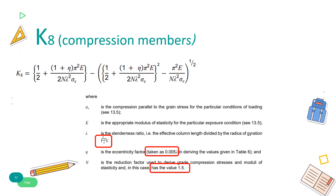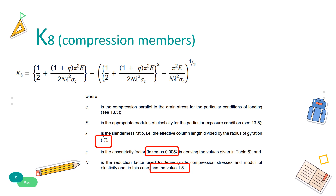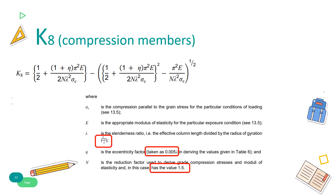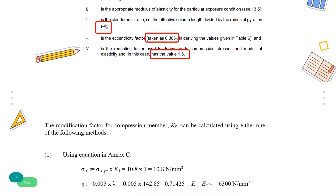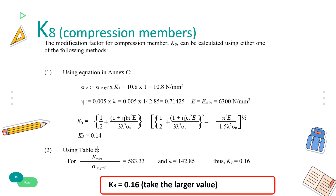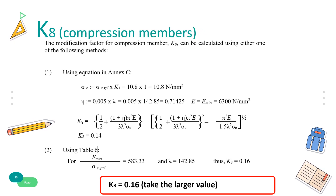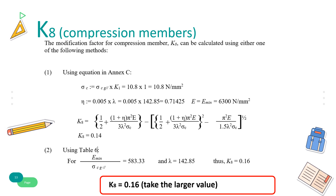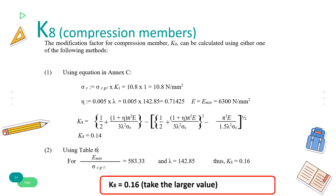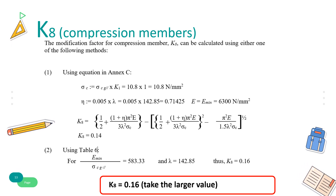The modification factor K8 can also be calculated using the equation in Annex C. The value of K8 for compression members with slenderness ratios equal to or greater than 5 is given by that equation. K8 is 0.14 using the Annex C equation, whereas K8 is 0.16 using Table 6. Taking the larger value, K8 equals 0.16.